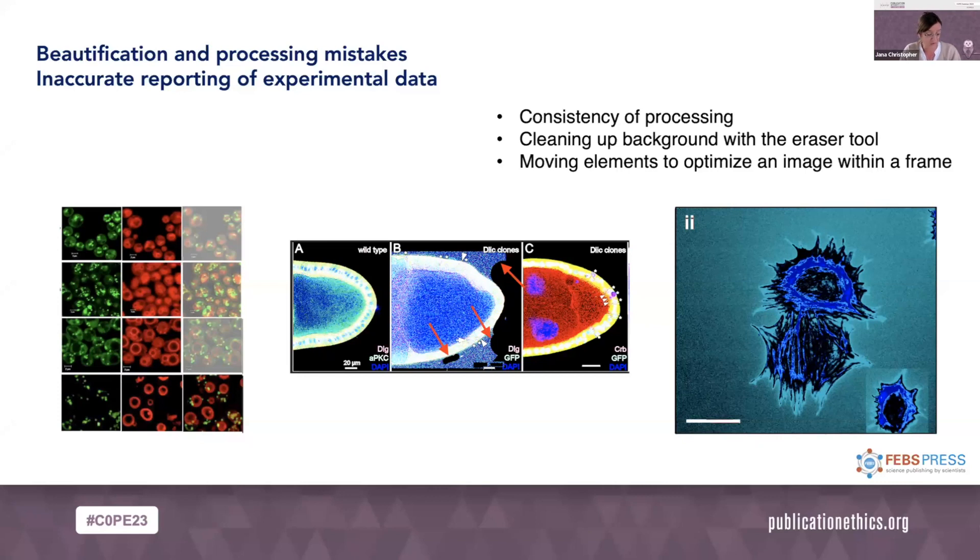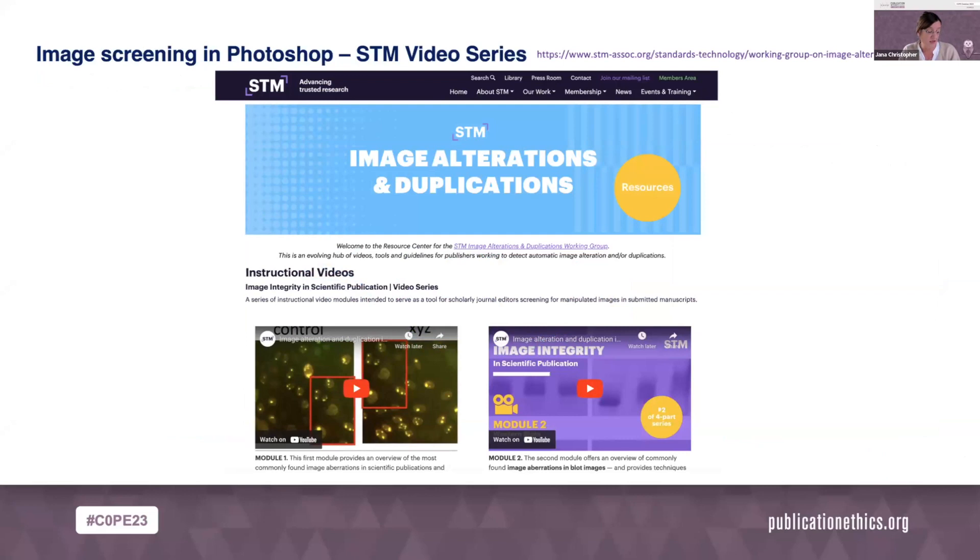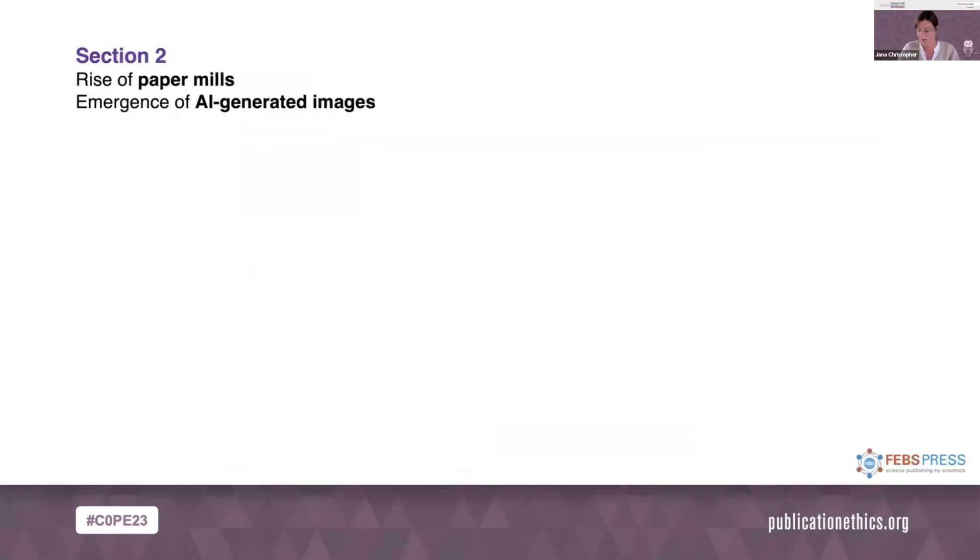I'd like to just briefly refer to the STM Integrity Hub, which has already been mentioned today by Chris. Together with the STM Working Group on image alteration and duplications, I'm currently producing a series of video tutorials on image screening, where I show many of the techniques I use in my daily routine and which might be helpful to editorial staff at scholarly journals elsewhere. And two of them are already available on YouTube and from the STM website. The link is on the top here. This is where I'd like to stop briefly and see whether there's any questions that you'd like to ask. Dan, if you want to moderate this a little bit, I'd be super grateful. Thank you.